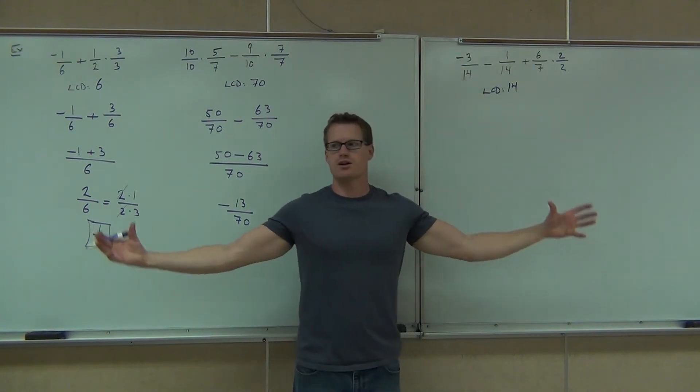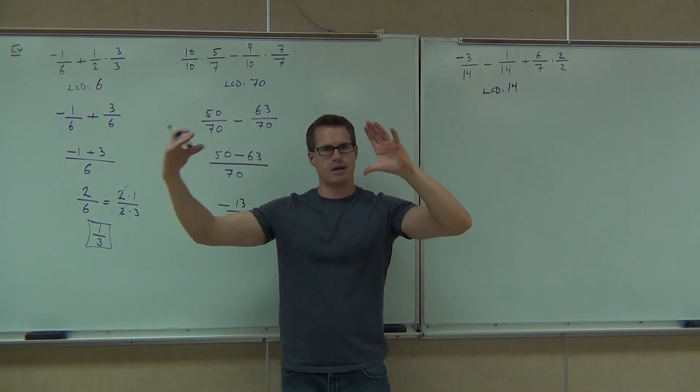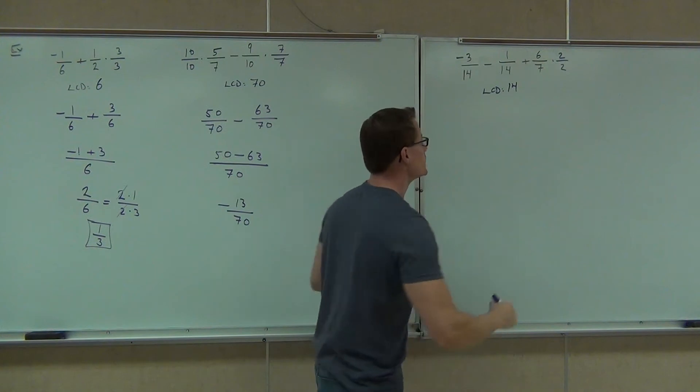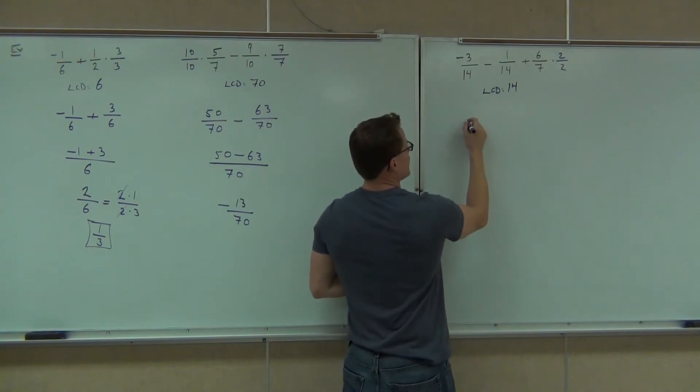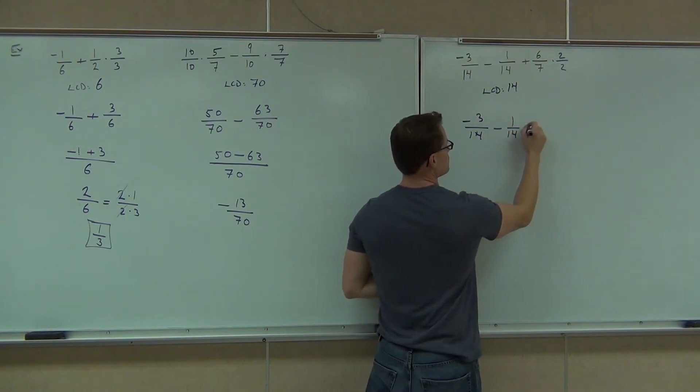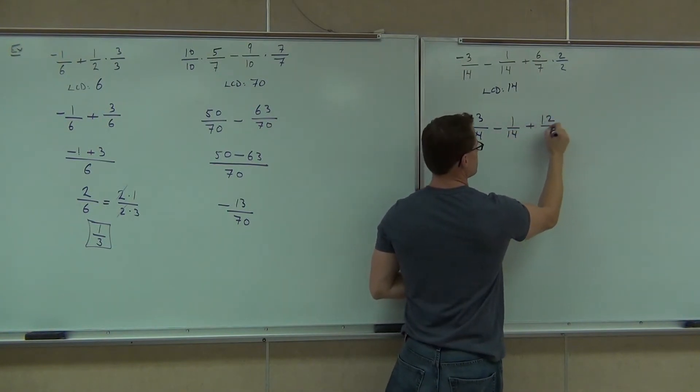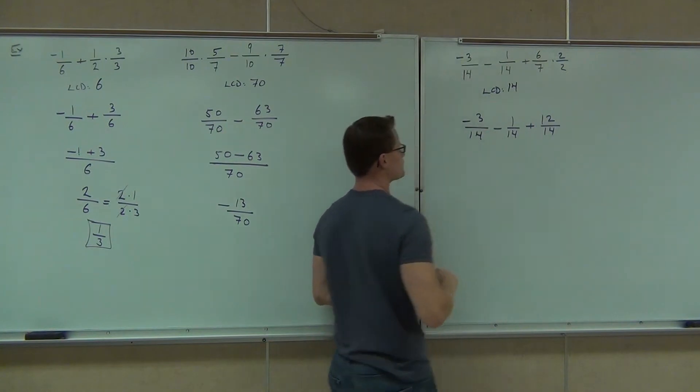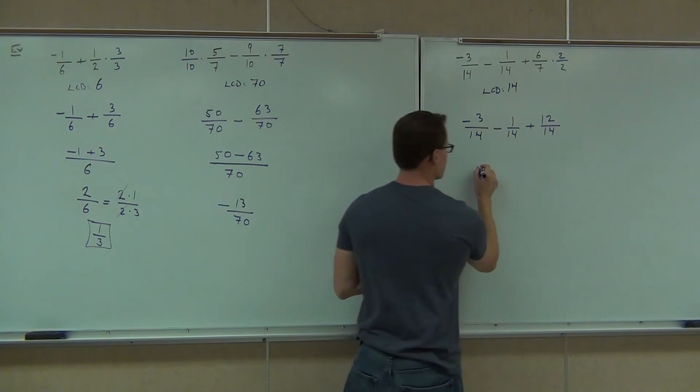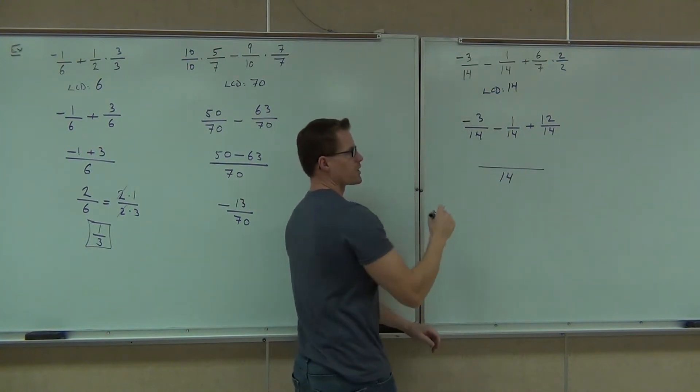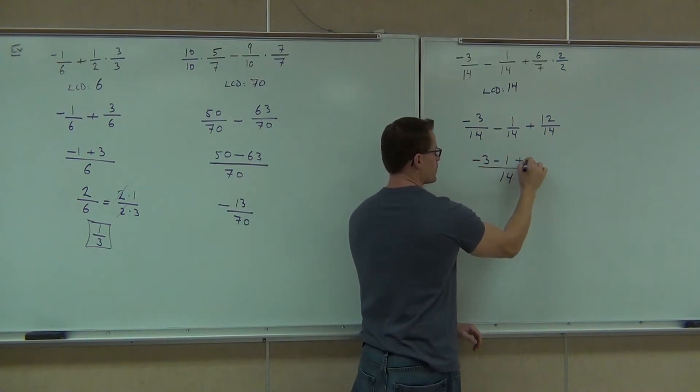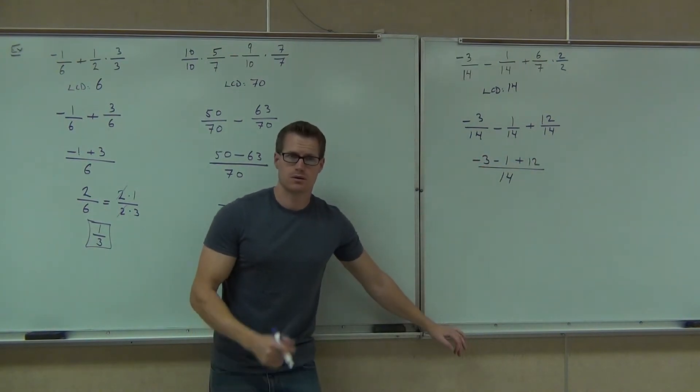That allows you, when you make one fraction out of it, to have a negative on the top instead of a negative up front. That way you don't forget that that is actually a negative 3, not a positive 3. That's where people make a mistake. Did you make it that far? Yes. Good deal.